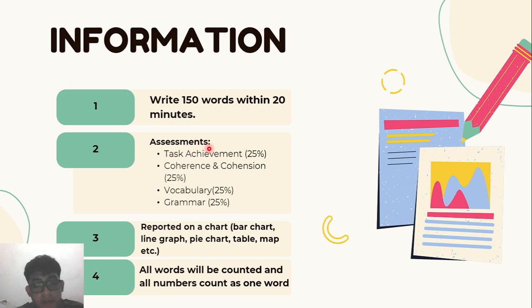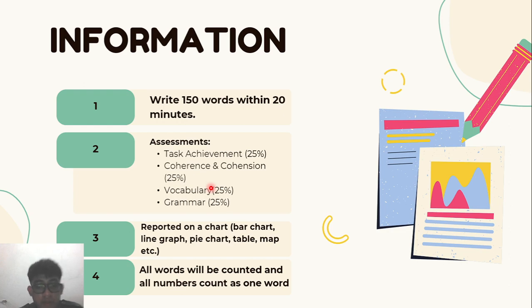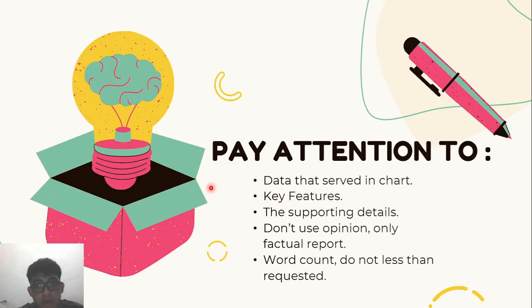The second point is about the assessment. There are four points, each worth 25 percent of the grade. The first is task achievement, the second is coherence and cohesion, the third is vocabulary, and the fourth is grammar. The third overall point is about reporting on charts like bar charts, line graphs, pie charts, tables, and maps — so please make sure you can read the chart. Also, all numbers count as one word.